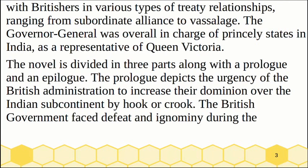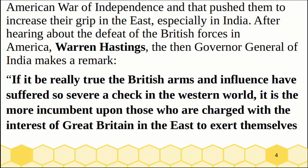The Governor-General was overall in charge of princely states in India as a representative of Queen Victoria. The novel is divided into three parts along with a prologue and an epilogue. The prologue depicts the urgency of the British administration to increase their dominion over the Indian subcontinent by hook or crook. The British government faced defeat and ignominy during the American War of Independence, and that pushed them to increase their grip in the East, especially in India.